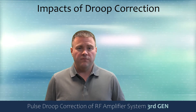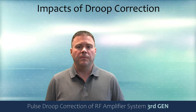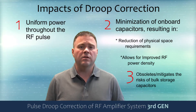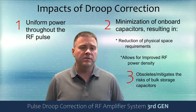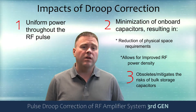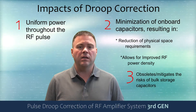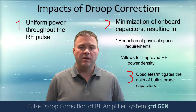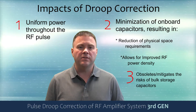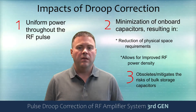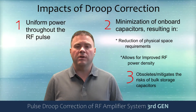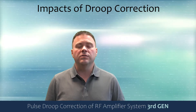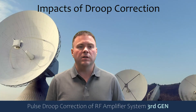The impacts of our new RF droop correction algorithm are quite substantial. First, we maintain uniform power throughout the pulse, which is a feature that many of our customers have asked for. Second, we have a reduction in the physical space requirements for each amplifier, meaning greater power density and more power in the package. Third, it obsoletes or at least mitigates the risks of bulk storage capacitors inside the modules. We believe this algorithm will be a feature that many of our customers are looking for, specifically those interested in radar and EW applications.